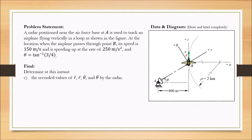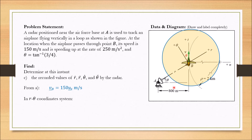Question C: the recorded values of R dot, R double dot, theta dot, and theta double dot by the radar. To answer these questions, we focus on the position of the airplane relative to the radar on the ground, using the R-theta coordinate system. R is the vector distance from the radar to the airplane, and theta is the angle of vector R from the horizontal. In this coordinate system, the velocity can be decomposed into R and theta directions, with component V_R in the R direction and V_theta in the theta direction.